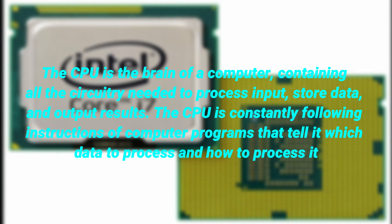What is a CPU, or central processing unit? The CPU is the brain of a computer, containing all the circuitry needed to process input, store data, and output results. The CPU is constantly following instructions from computer programs that tell it which data to process and how to process it.